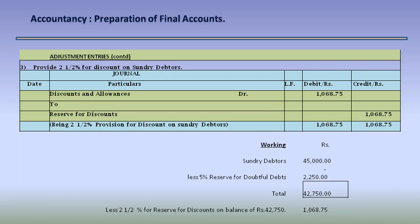Adjustment entry 3: provide 2.5% for discount on sundry debtors. We pass: Discount and Allowances Dr. 1,068.75 to Reserve for Discounts 1,068.75. The working is: sundry debtors Rs. 45,000 less 5% reserve for doubtful debts Rs. 2,250 equals Rs. 42,750. On this Rs. 42,750, we provide 2.5% reserve for discount on debtors, which comes to Rs. 1,068.75.